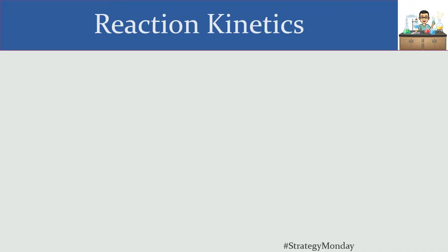Welcome back to the ChemOG. Today we're going to take a look at reaction kinetics. Kinetics have to do with the speed of a reaction — in other words, how fast we can make it happen. Many times, to understand the speed of a reaction, we need to break it down into several different steps to understand which step is faster, which one is slower, and what role each molecule plays in the speed of the reaction overall.